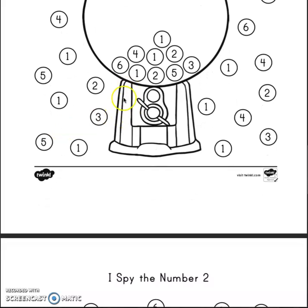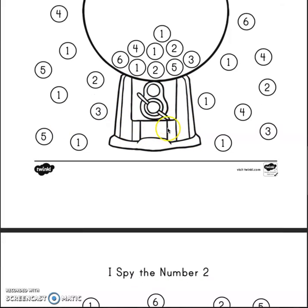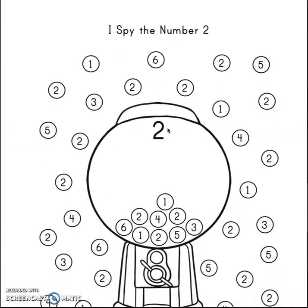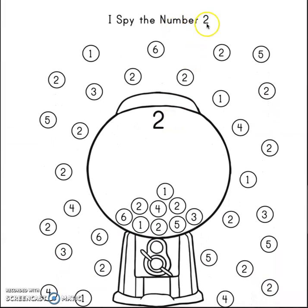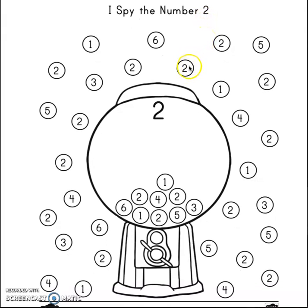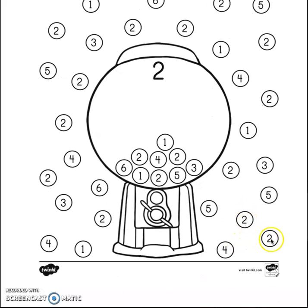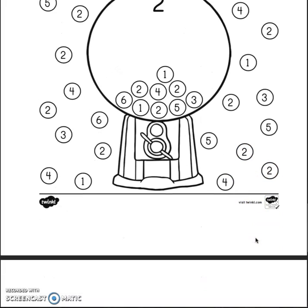Let's continue. And if you want, guys, you can also color this machine with markers or crayons. And let's do the same, but with number two — color number two. This one, this one. No, not that one. Very good. Color this one, this one, this one. Color the number two everywhere you see it. Color and color. And that's it.